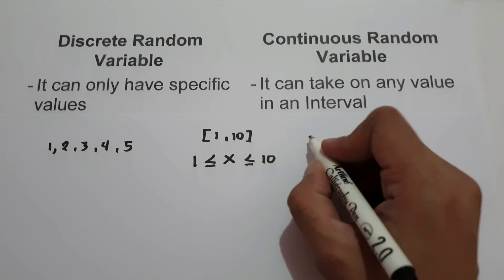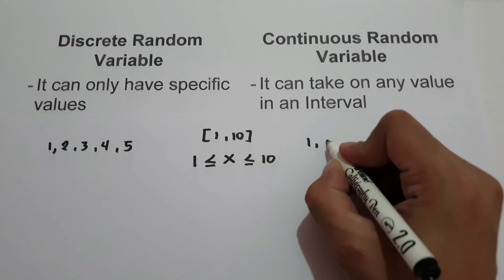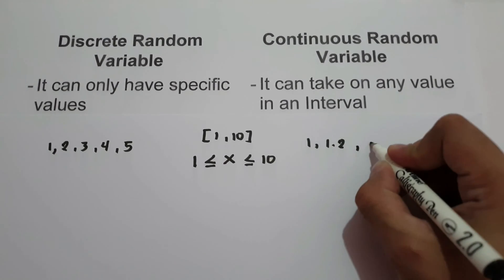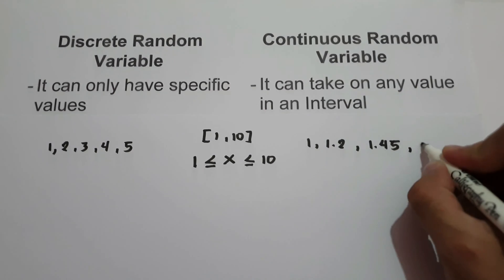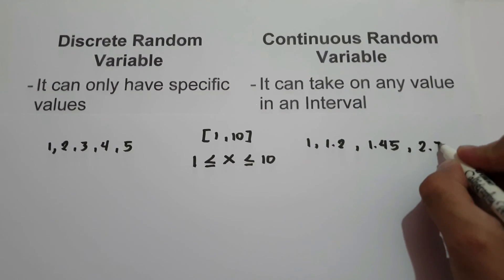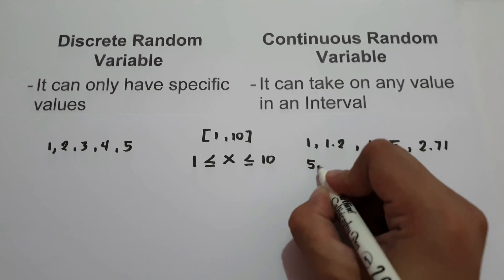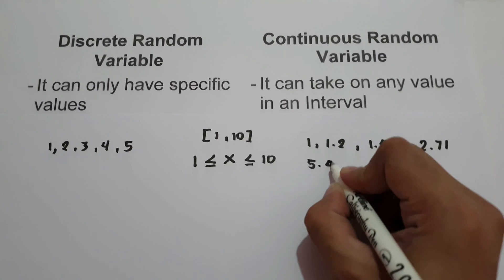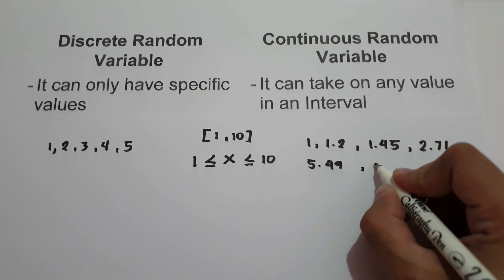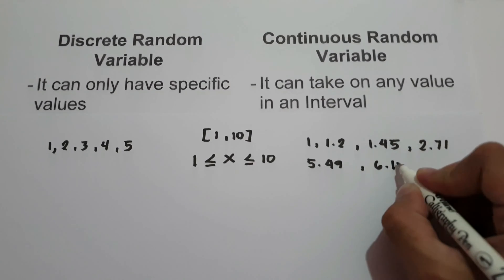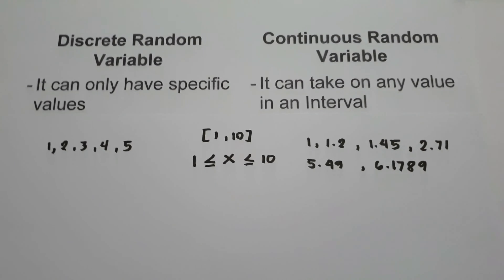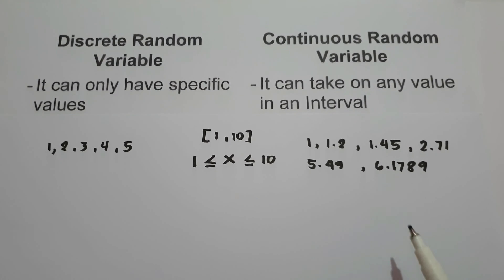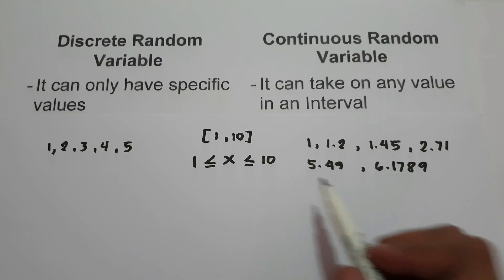While in continuous random variable, the value of x can be 1, 1.2, 1.45, 2.71, 5.49, or 6.1789. So it can be any value in an interval of 1 to 10.